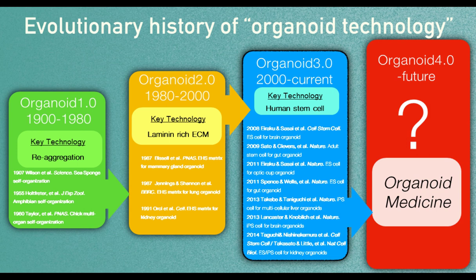The major driver for the increase in organoid publications is human stem cell technologies — Organoid 3.0. This includes adult stem cells and pluripotent stem cells such as embryonic stem cells or iPSCs. Using these, Dr. Sasai and Dr. Clevers found methods to make human-specific organoids, followed by a series of investigators including Jim Wells, Dr. Taniguchi, Dr. Huch, Nishi Nakamura, and Melissa Little to make gut, kidney, and brain organoids.